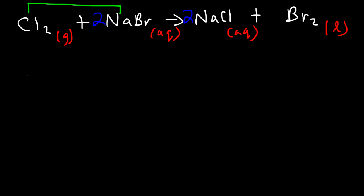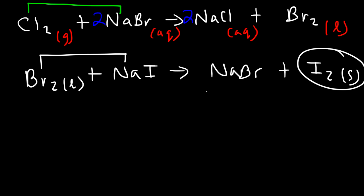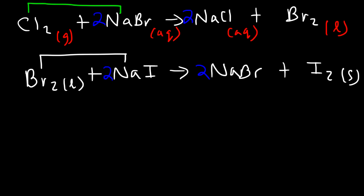Another example: bromine reacting with sodium iodide. Bromine pairs up with sodium producing sodium bromide, and iodide is displaced out of the solution as diatomic iodine, which is a solid. Whenever you have a halogen reacting with an aqueous halide solution, the halogen will displace the other halogen out of the solution.